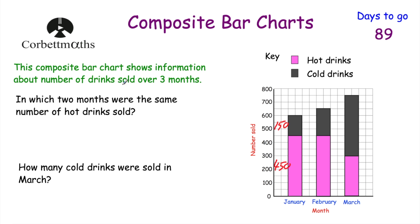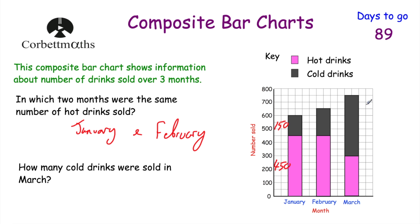The first question asks: in which two months were the same number of hot drinks sold? Looking at the pink bars, January and February both show 450 hot drinks — so the answer is January and February. The second question asks: how many cold drinks were sold in March? Counting up from the hot drinks section in boxes of 50, we get 450 cold drinks in March. Alternatively, the total is 750 and hot drinks are 300, so 750 minus 300 equals 450 cold drinks.